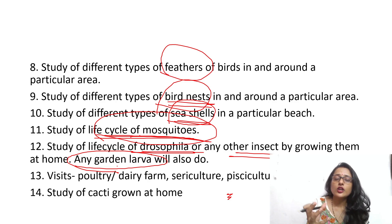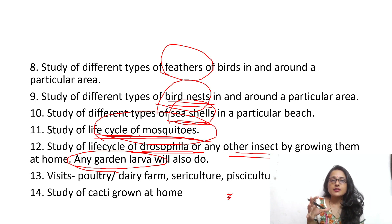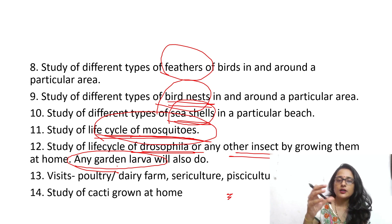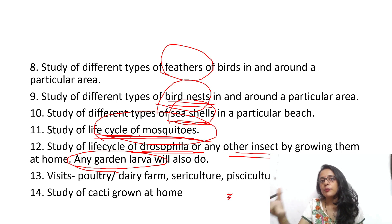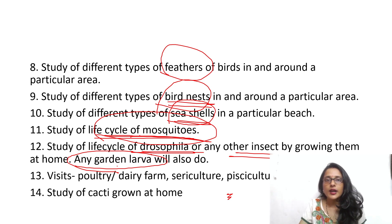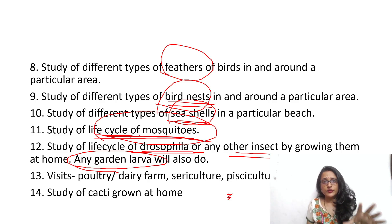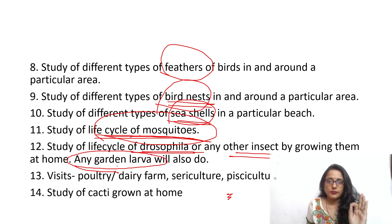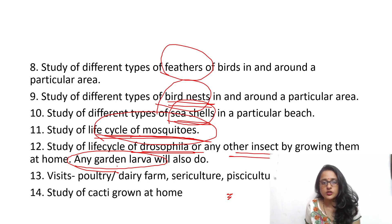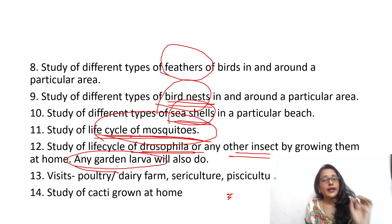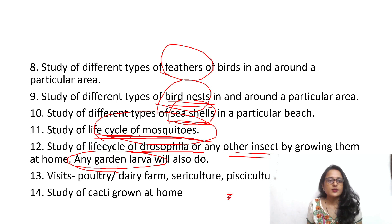You can also collect larvae from cauliflower or from the garden, keep them in a glass jar, provide appropriate food, and keep them alive as long as possible so you can observe and photograph the life cycle transitions, noting how many days each stage takes.